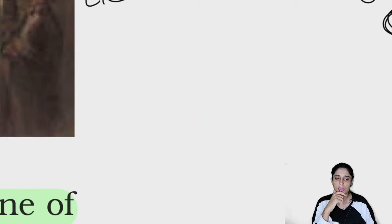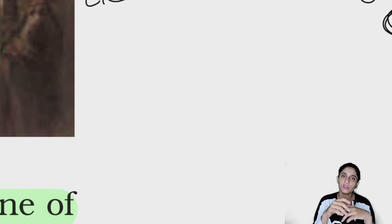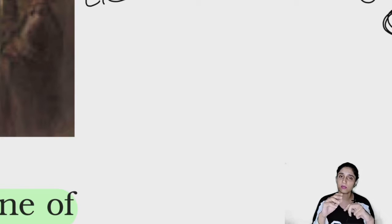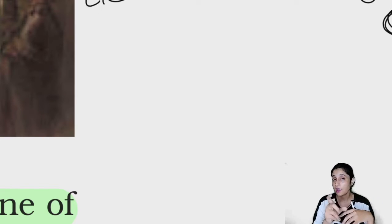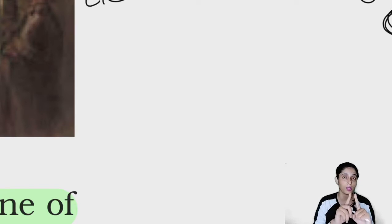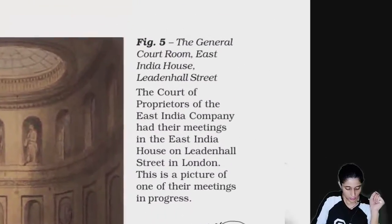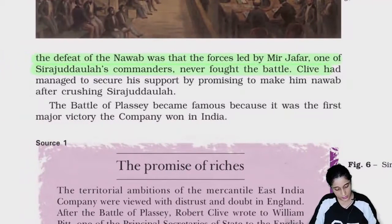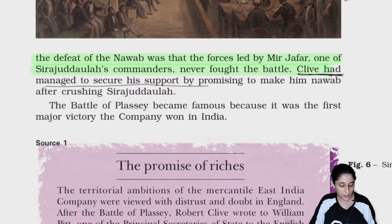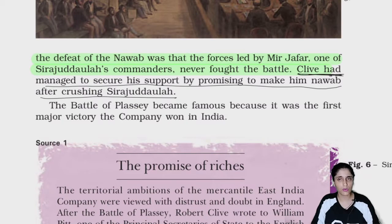Isliye, agar aap kabhi Bengal jao toh wahaan pe ek bahut famous term hai — log ek doosre ko kehte hain, 'kahi tu Mir Jafari toh nahi karega' — matlab kahi tu dhokha toh nahi dega? Wahaan pe dhokhe ke liye 'Mir Jafari' word ka use kiya jaata hai, kyunki Bengal ke itihaas mein Mir Jafar se bada dhokhebaaz ya desh-drohi koi nahi hai. Robert Clive ne Mir Jafar ka support secure kiya tha by promising to make him Nawab after crushing Sirajodolla — Clive ne usko bola tha ki agar Sirajodolla ko haraane mein tu humari help kare toh hum tujhe raja bana denge.